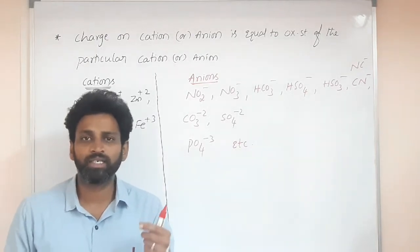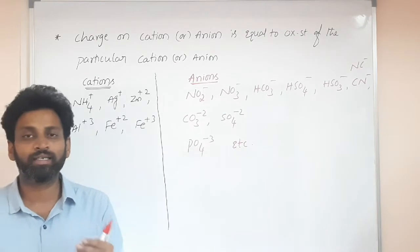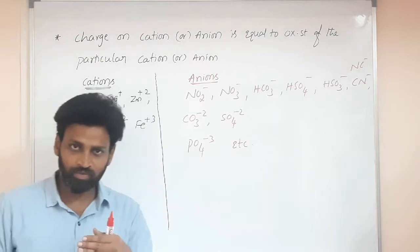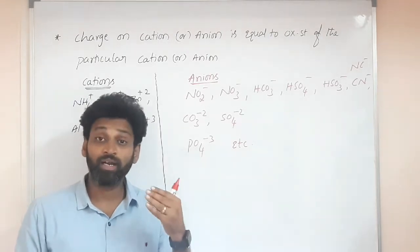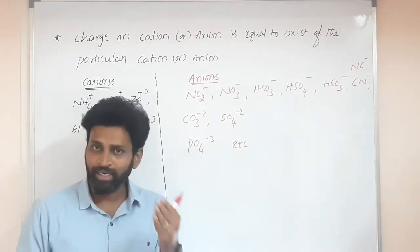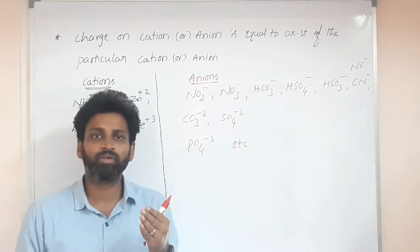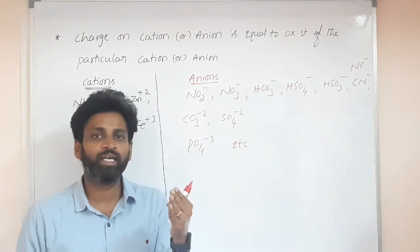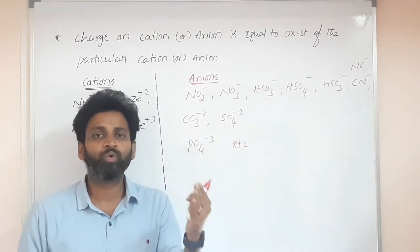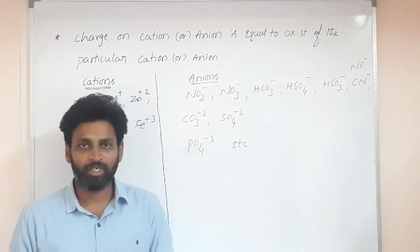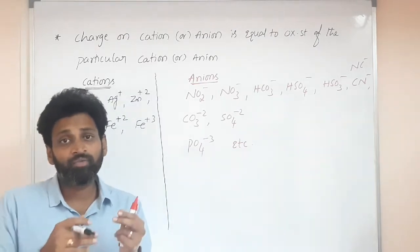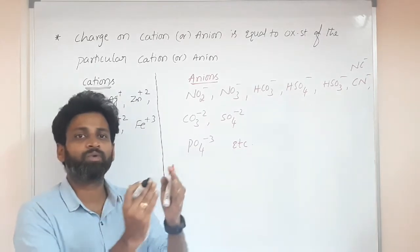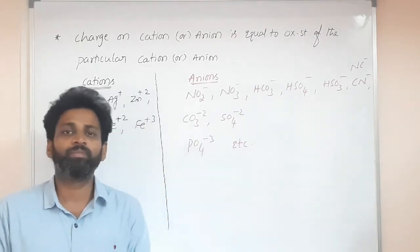For alkali metals, oxidation state is always plus one. For alkaline earth metals, it is always plus two. Hydrogen exhibits either minus one or plus one. For halogens, the general oxidation state is minus one. From group 5 onwards, oxidation state equals group number minus eight, and up to group four, oxidation state equals the group number.